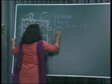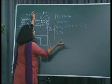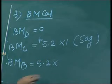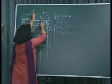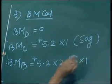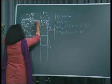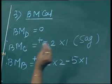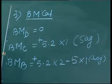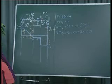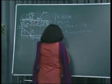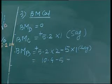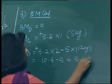Then bending moment at point B: put your hand at point B and look to the right side. There are two forces. First is VD: 5.2 into 2 (distance 1 plus 1), which is sagging, so positive. Second is the 5 kilo Newton force: the distance up to point B is 1 and it will rotate lifting the beam upwards — convexity above — so it is hogging and negative. Therefore: 5.2 into 2 = 10.4, minus 5 into 1 = 5, giving us 5.4 kilo Newton meters.